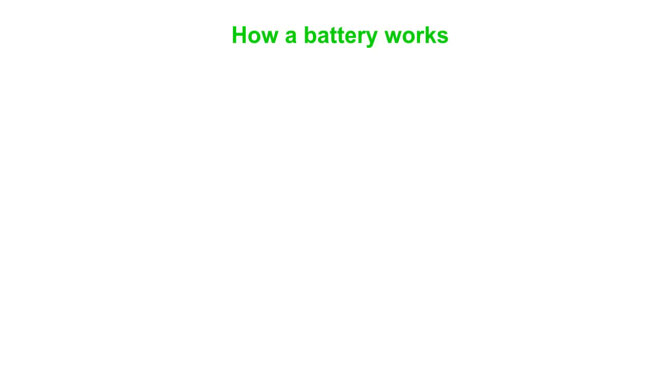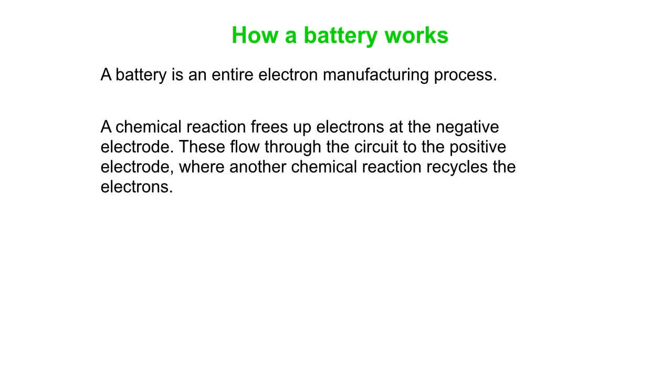It is chemistry. So let's just briefly talk about how a battery works. And the neat thing about a battery, it's an entire electron manufacturing process sealed up in a little packet. So we've got a chemical reaction that frees up electrons at the negative electrode. And those flow around the external circuit, through the light bulb filaments or your TV or whatever, to the positive terminal. And then another chemical reaction recycles those electrons.